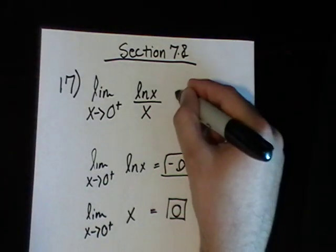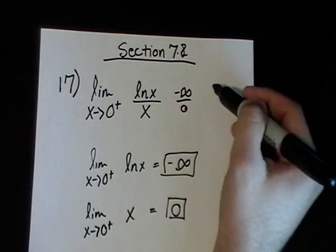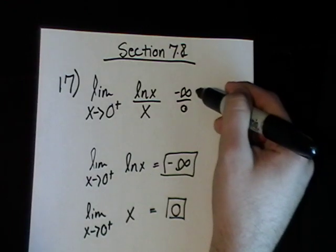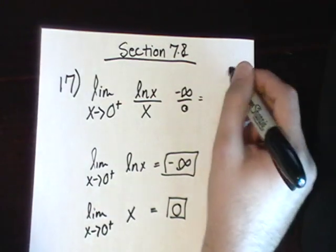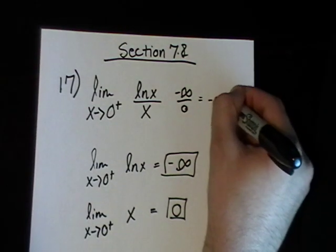So then we want to take negative infinity over 0. We're dividing a very large negative number by a very small positive number. That will actually give us back negative infinity.